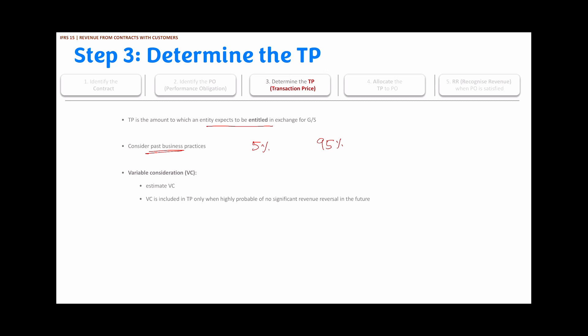The standard provides further clarifications when there is variable consideration involved in a contract. The entity will estimate the variable consideration, and whenever there are uncertainties, variable consideration will be included in the transaction price only when there is no significant revenue reversal expected in the future — there should be some certainty of no significant revenue reversals.